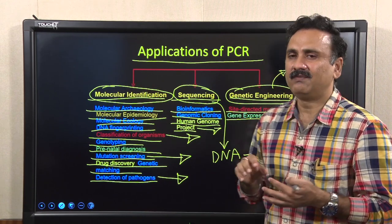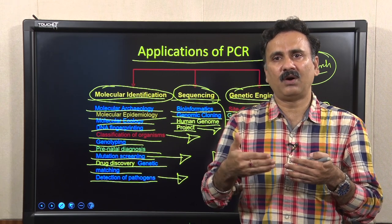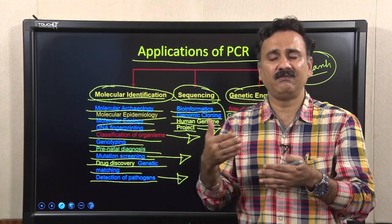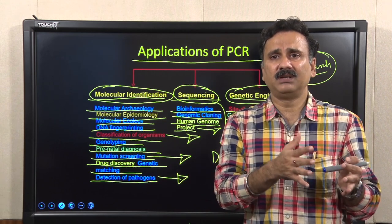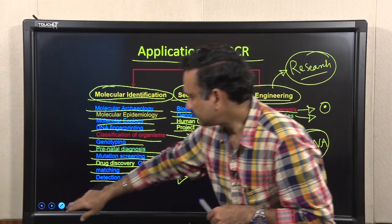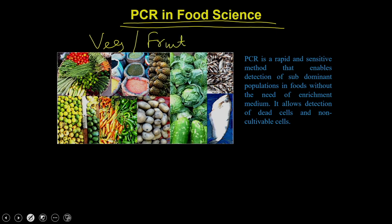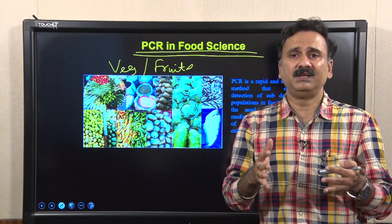Considering these three aspects, we will now get into the application part and cover applications across different streams of science — plant science, animal science, and others. The first example is the use of PCR in food science. Food science involves fruits and vegetables, and a major problem is that they can be infected with different types of pathogenic organisms. If you consume infected produce, bacteria or viruses can enter the human body.